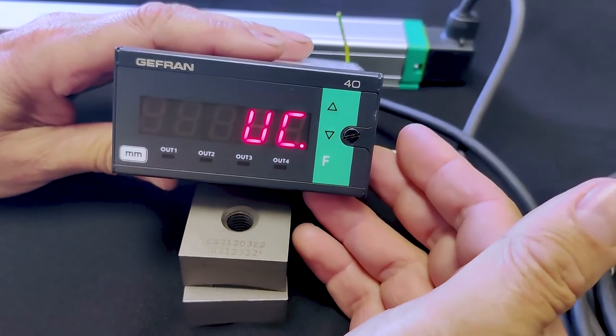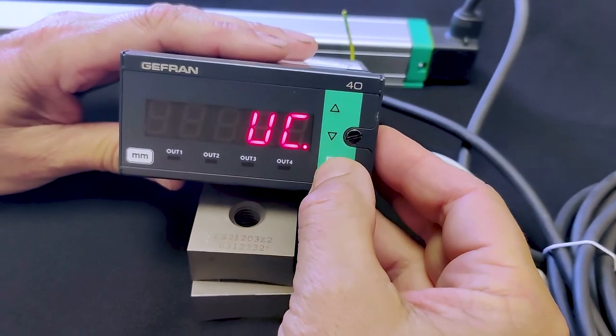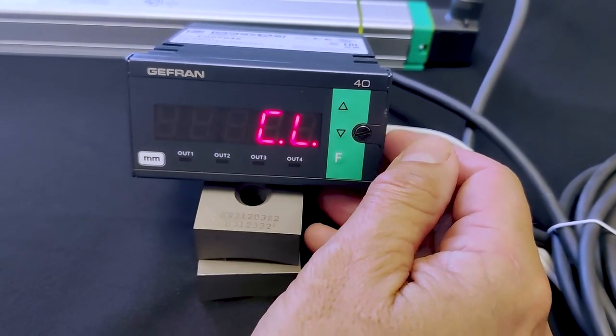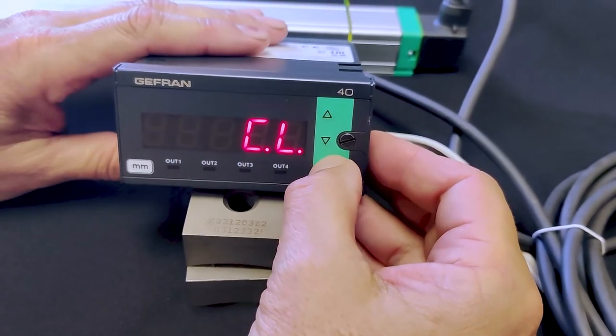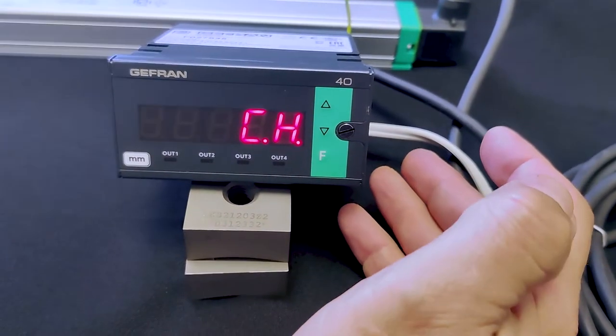Press and hold on the F key until you get to UC. For a potentiometer you put in number 2. CL is the low limit calibration. So we're fully inserted. Let's press and release F.